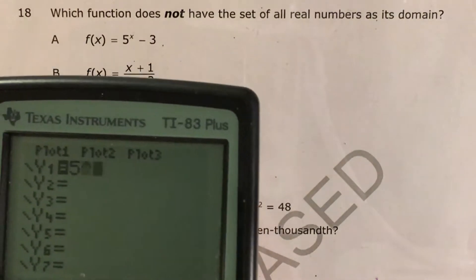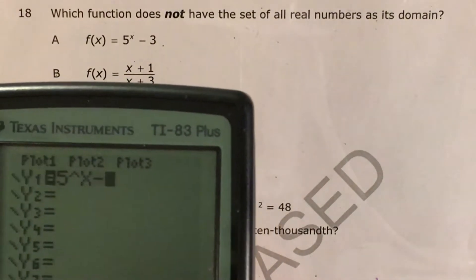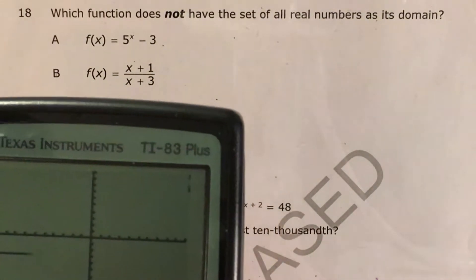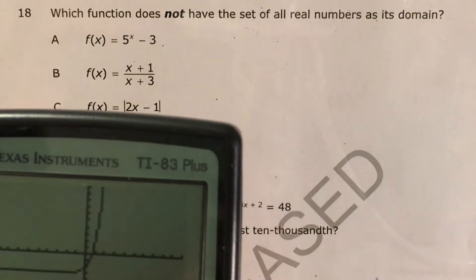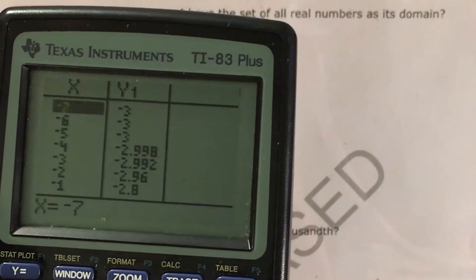Because if I just type in 5 to the X minus 3 and graph it, it can show me some stuff, but it doesn't show me everything, so I can actually press second graph and it gets me my table.